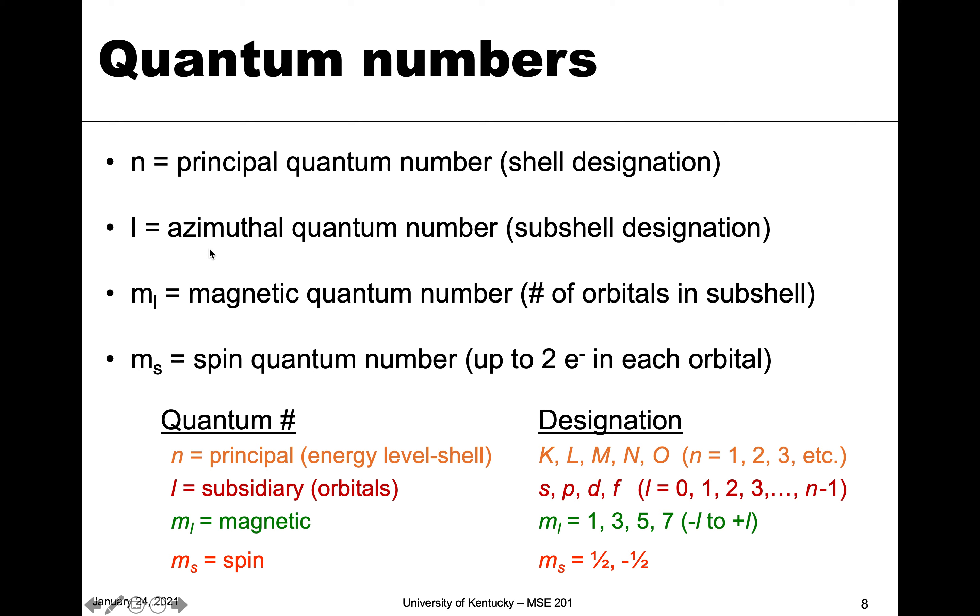We have the magnetic quantum number, which gives us the amount of orbitals we have in each sub-shell. Then the spin quantum number accounts for the fact that each orbital will have not one but two electrons. This is sometimes referred to as—here it's one half, negative one half—so spin up, spin down is sometimes what you see with those.